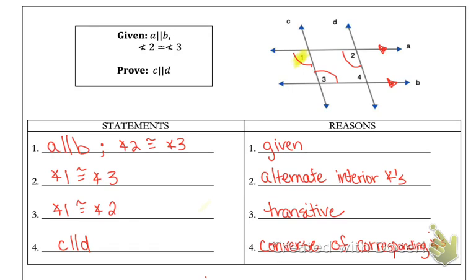It's important to remember there's not always just one way to do this proof. We could have compared angles two and four, then used angles three and four with the interior angles theorem and the fact that they're supplementary. Your proof wouldn't have been wrong — it just would have been different.